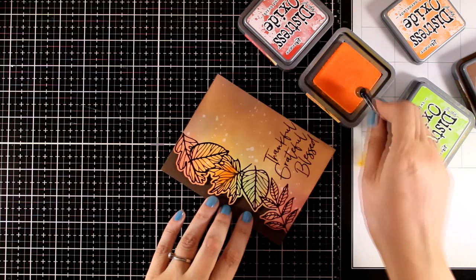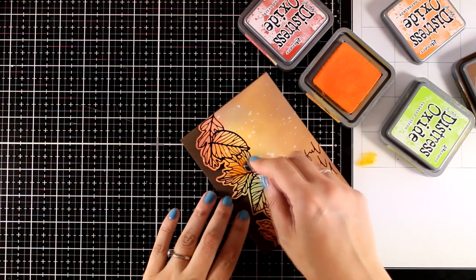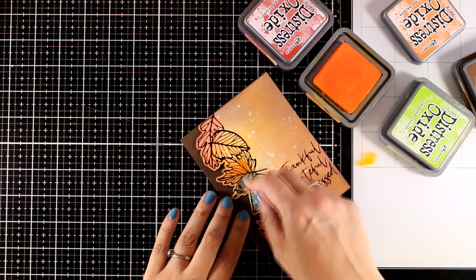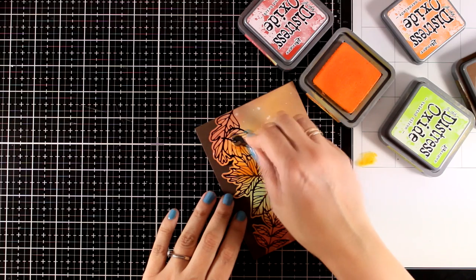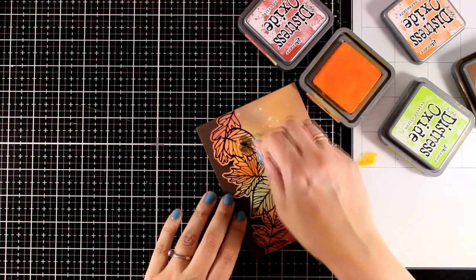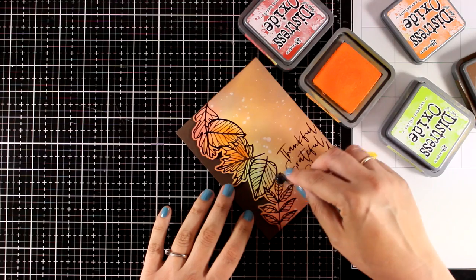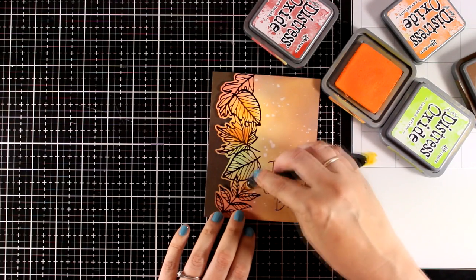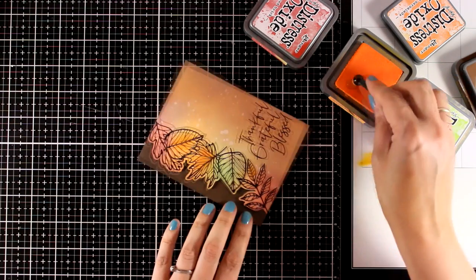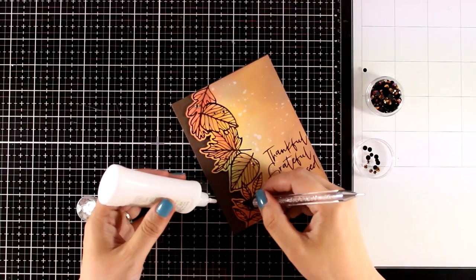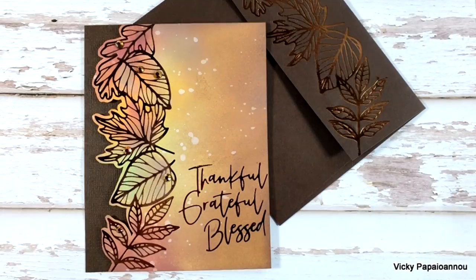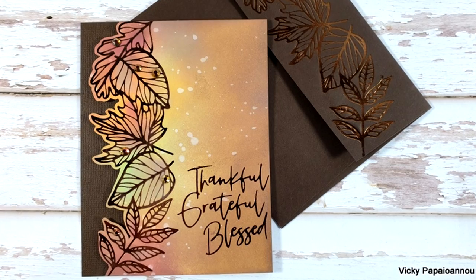If you want, you can use a very small blending brush and add more color on some of the leaves. This doesn't have to be precise as long as you don't get outside of the lines, and I'm not going to overdo it. I just wanted to show you that this is a possibility. I added a few copper gems on some of the leaves, and I also foiled the flap of a matching envelope.